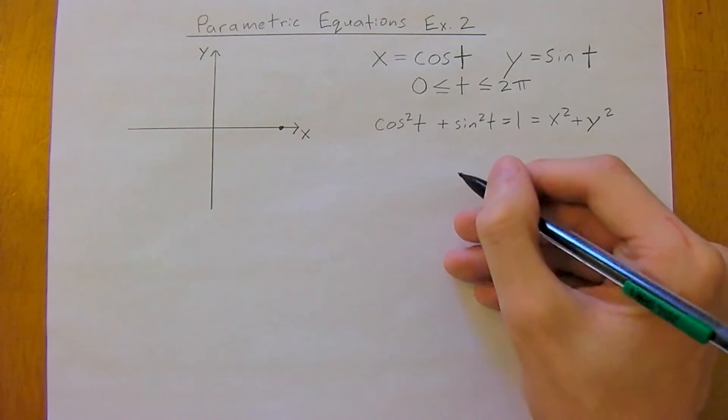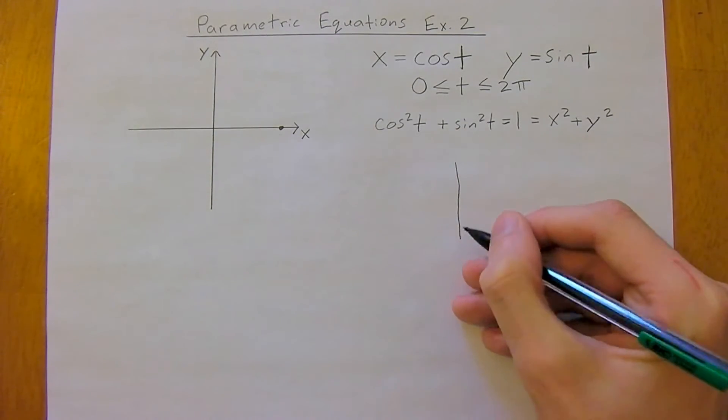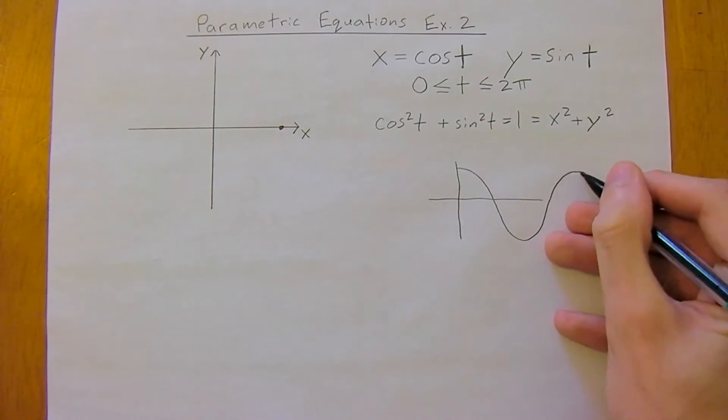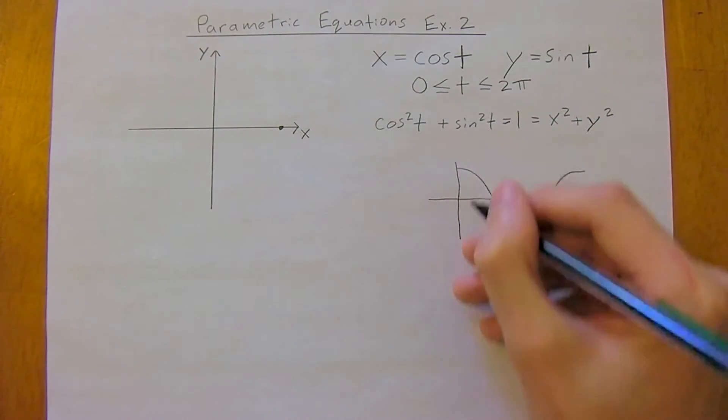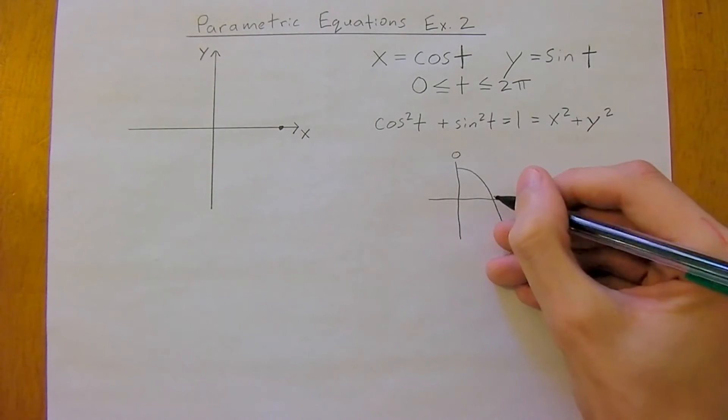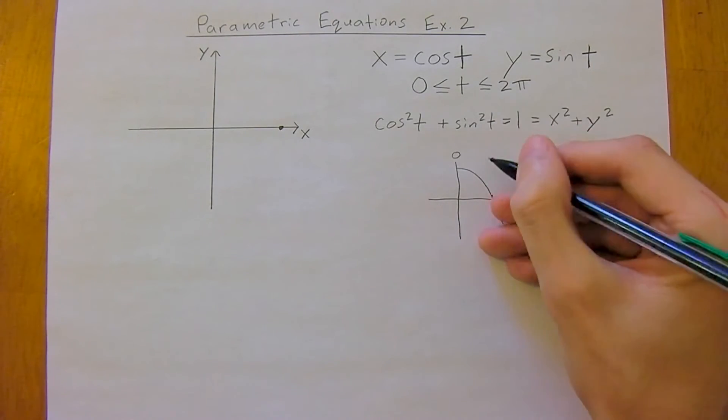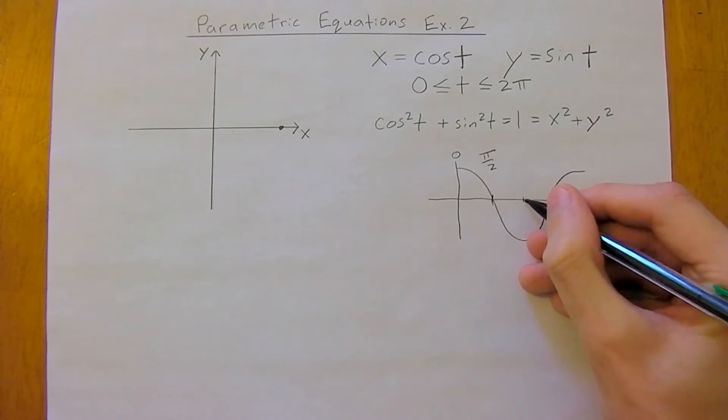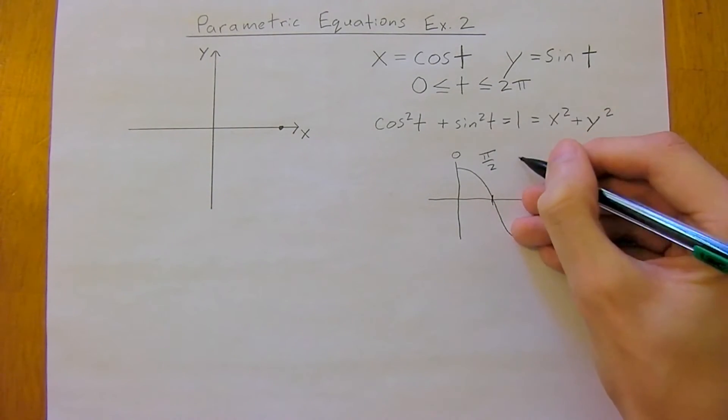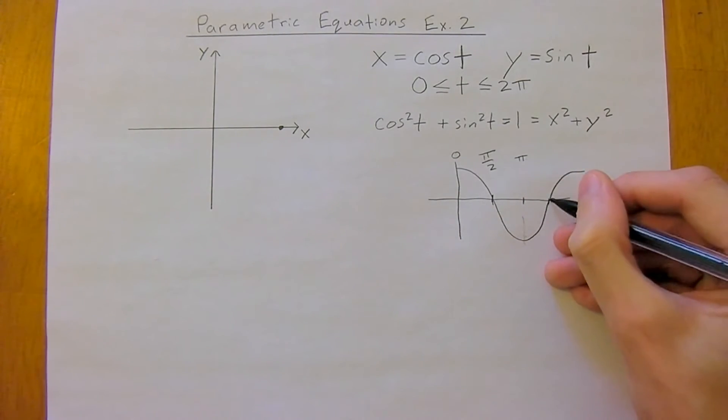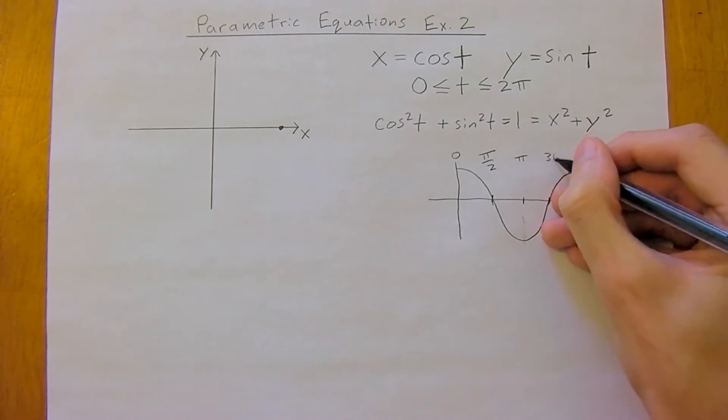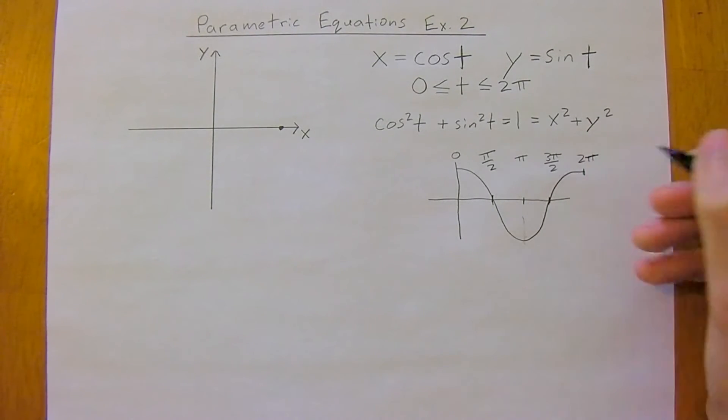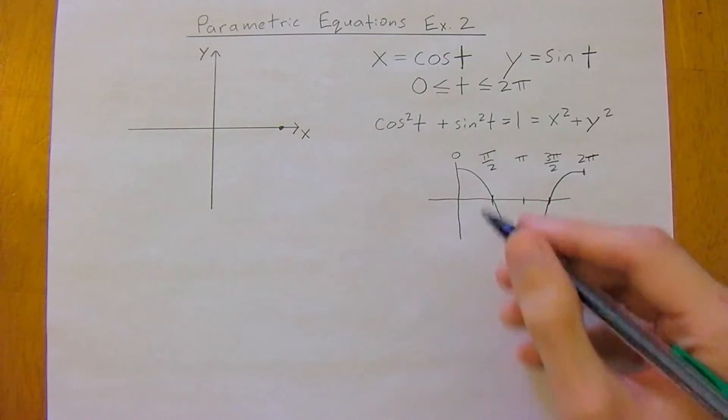And so, remember that the graph for cosine starts up here, dips down, heads back up. So this is at 0, crosses this point at pi over 2, and then down at its minimum is at pi, crosses here again at 3 pi over 2. This is just the unit circle I'm doing here, and the graph of cosine.